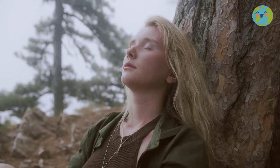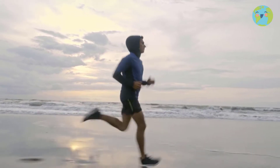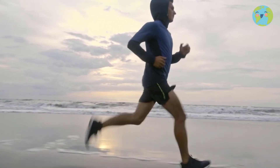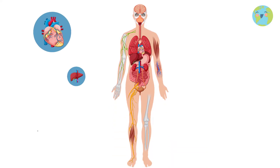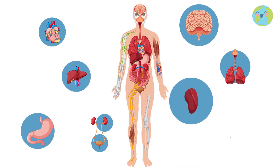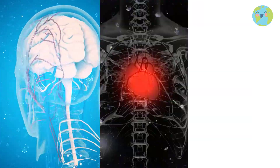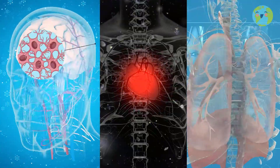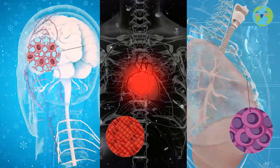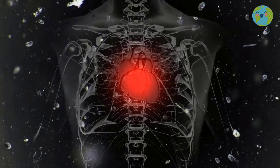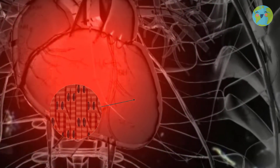Every day, our body performs many tasks which we do not realize, such as breathing, moving, digestion, and many more. These happen thanks to phenomenal structures called organs, such as the brain, heart, or lungs. And in turn, each organ and part of our body is made up of many much smaller living creatures which make it possible for us to live, called cells.